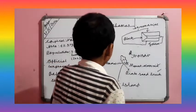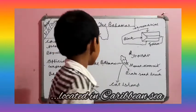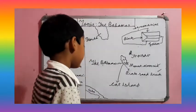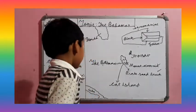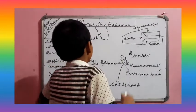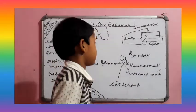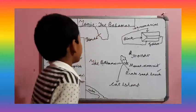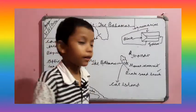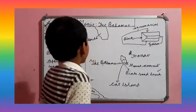Bahamas is located in the Caribbean Sea. It is north of Cuba and southwest of the USA state of Florida. Bahamas is between Cuba and Florida.